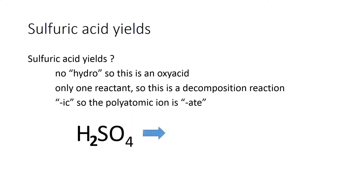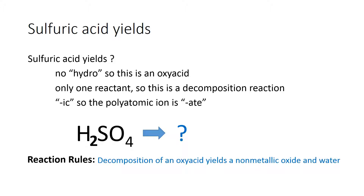So now, sulfuric acid again yields what? Our reaction rules say the decomposition of an oxy acid yields a non-metallic oxide and water. So our non-metallic oxide comes from our polyatomic ion, so it has sulfur and an oxygen — oxide.